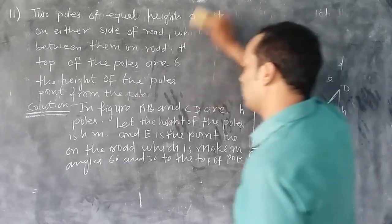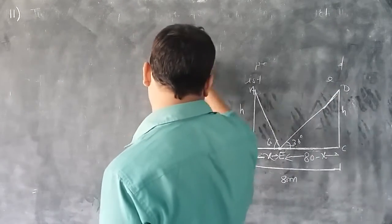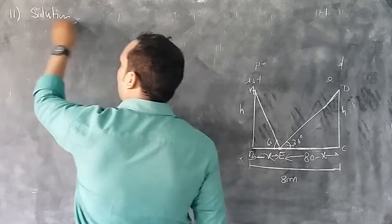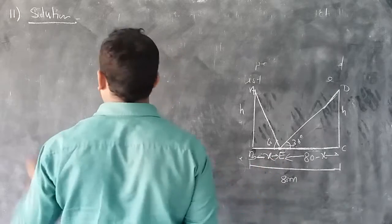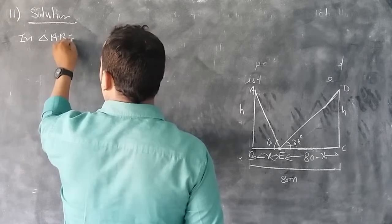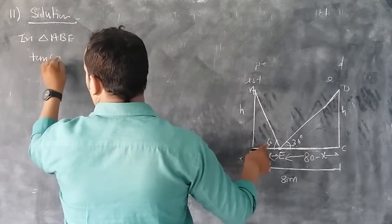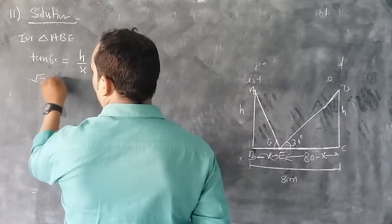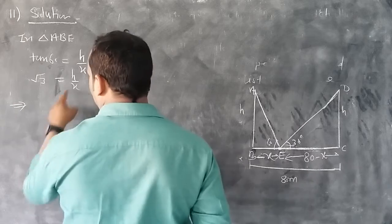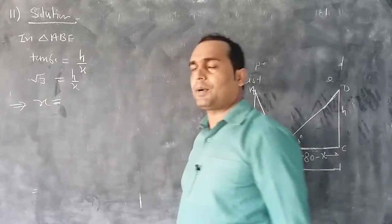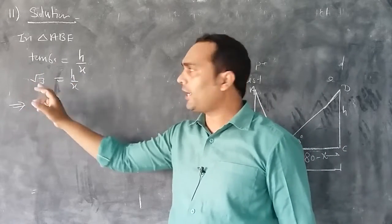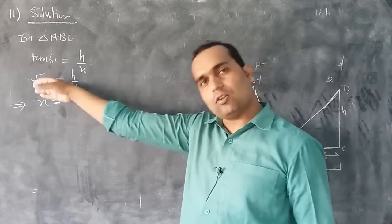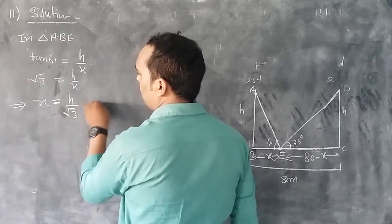In triangle ABE, using tan 60°: tan 60° equals perpendicular upon base, which is h upon x. The value of tan 60° is √3. So √3 equals h upon x. Cross multiplying: h equals √3·x, therefore x equals h upon √3. This is equation 1.